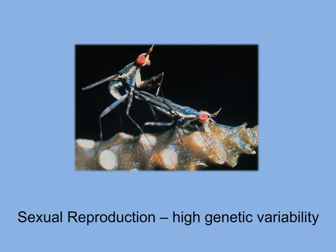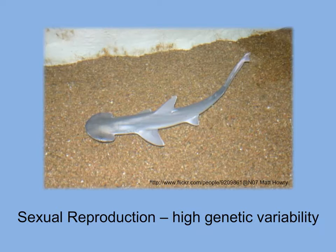In sexual reproduction, two parents contribute genetic information in the form of gametes, or sex cells. These flies are mating so their gametes can get together. The gametes fuse and an offspring is produced from the fertilized egg; therefore, the resulting offspring has a unique genetic structure. The bonnethead shark only reproduces asexually if females cannot find males — otherwise, they will undergo sexual reproduction.